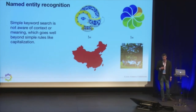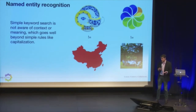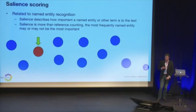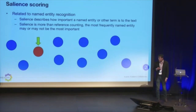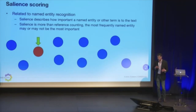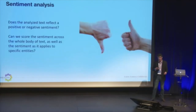Deeper dive: named entity recognition. Simple keyword search doesn't understand context. When we search for 'China', we might be talking about China the country or china the stuff we put on our table. Or 'Alfresco' the company versus dining outside. NLP can help us understand the difference in the context of our text. Somewhat related, we can also do salience scoring with NLP — that's how important a named entity or term is to the text. It's more than just reference counting: the most frequently occurring term in a text may not be what the document is actually about.